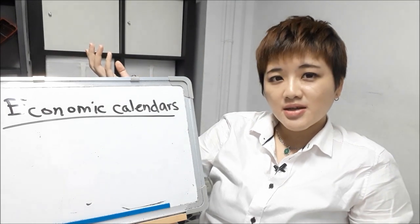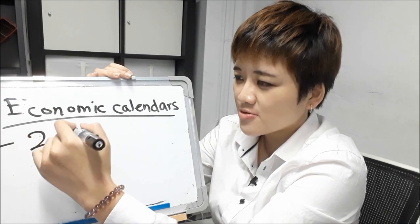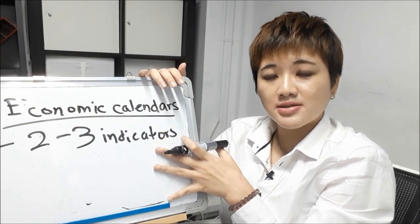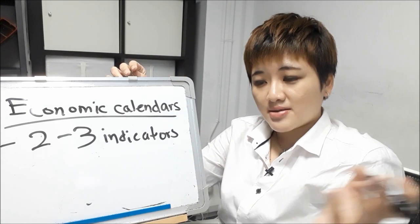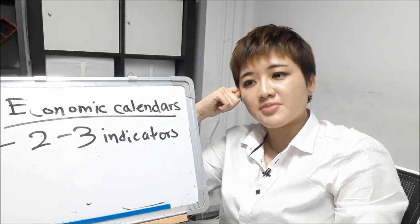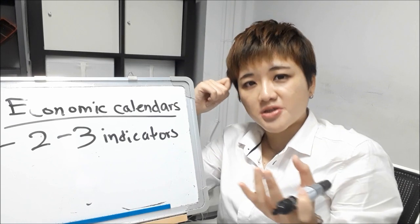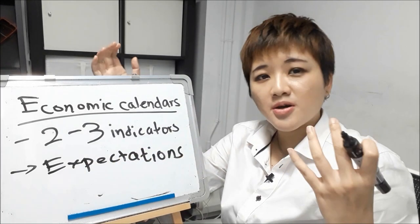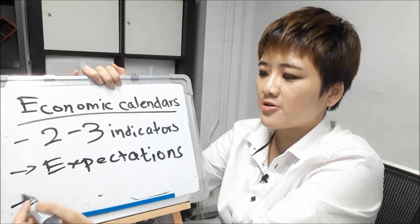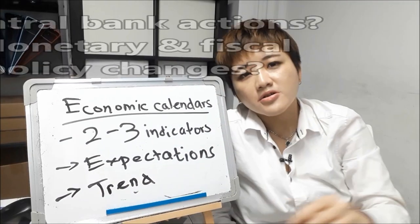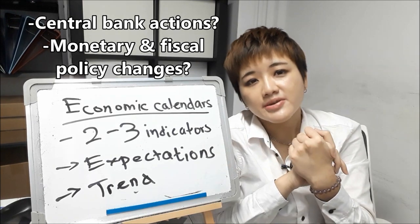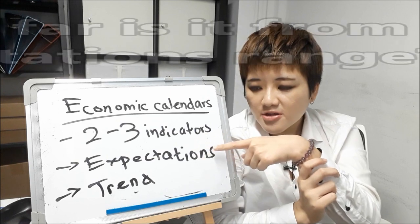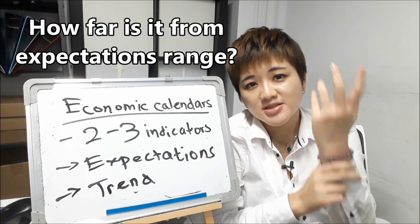If this seems complicated, as a start try to pick two to three indicators to look at and study. For a couple of months, look at how the releases of these indicators impact the currency you're trading — this is how you improve. You cannot just look at a positive number and buy the currency, because the absolute number is not as important as the expectation. You need to look at expectations, the big picture of what's happened in the past few months, the overall trend of the indicator, how central banks would respond, how monetary and fiscal policy might change, and how far away the actual is from consensus.